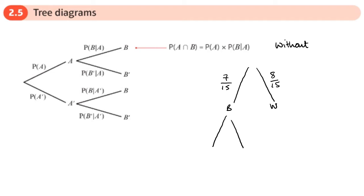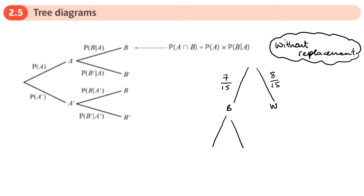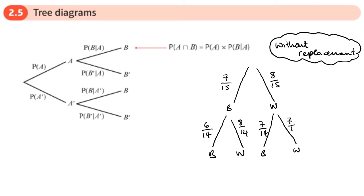This is where the conditional probability comes in — when things are not replaced. If we take a black out, we now have 6 out of 14, and 8 out of 14. On the other branch, because we take out a white one, it'll be 7 over 14 for each of the remaining options.